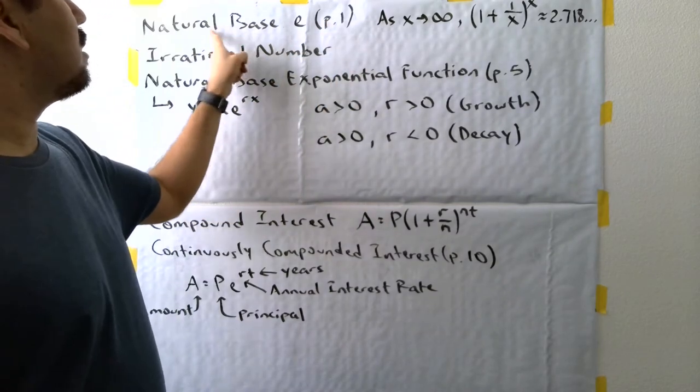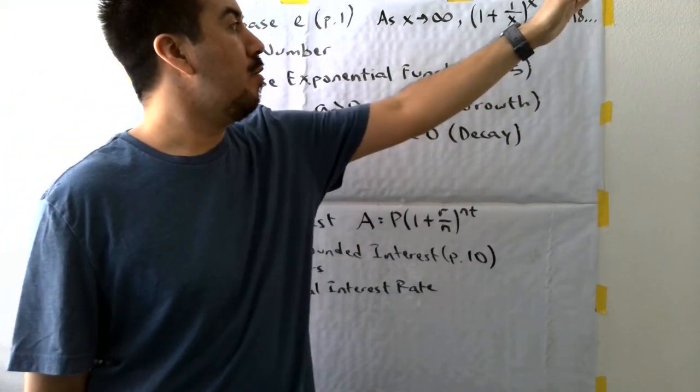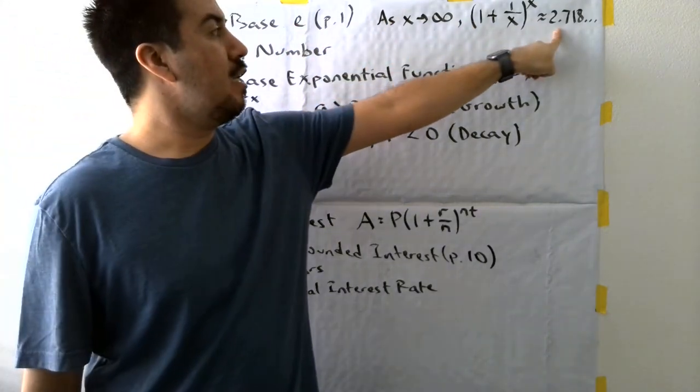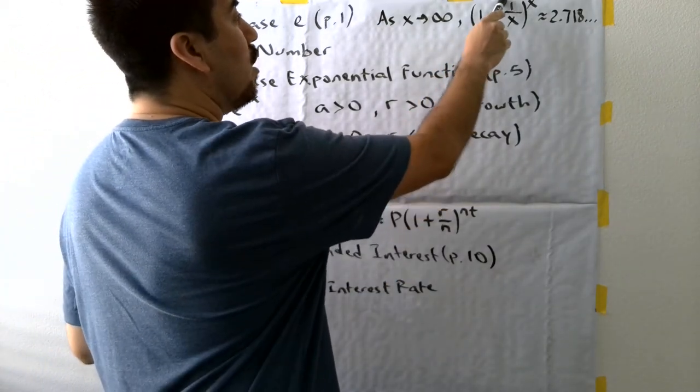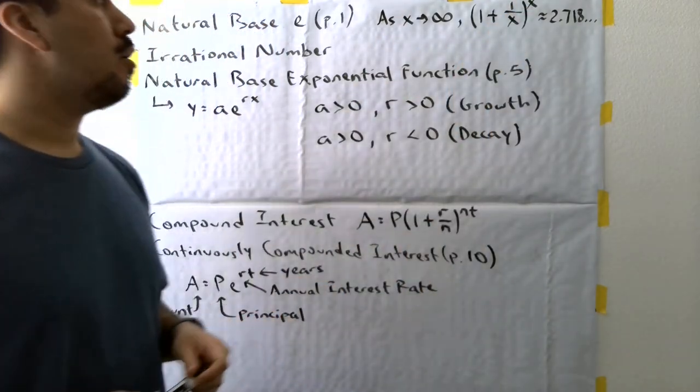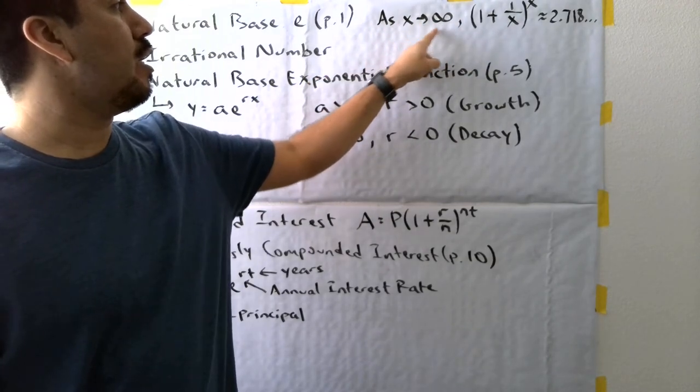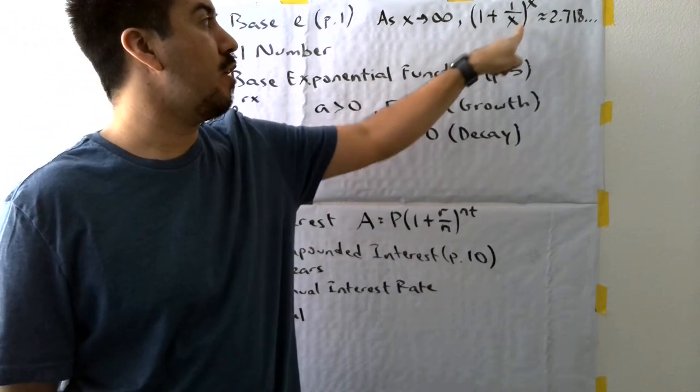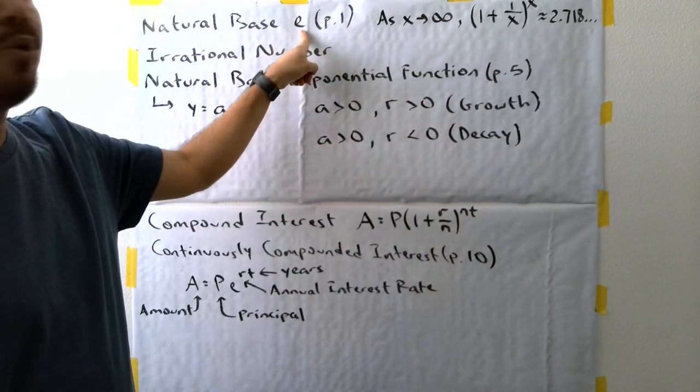That's what this natural base is represented by, 2.718 dot dot dot, meaning continuous values. The letter E represents that number. The best way to approximate it is by this expression here: 1 plus 1 divided by x in parentheses raised to the x power. So this expression is such that when x increases in value, it heads towards positive infinity. The bigger the value you put in here and there, the same values, it's going to get closer and closer to the irrational number E.